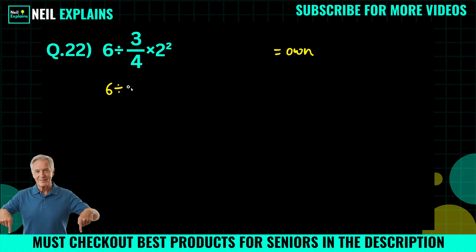6 divided by 3/4 times 2 square. 2 square is nothing but 2 times 2, which equals to 4. So we will write here 4. Now 4 times 1, 4 times 1, or 6 divided by 3, which equals to 2.